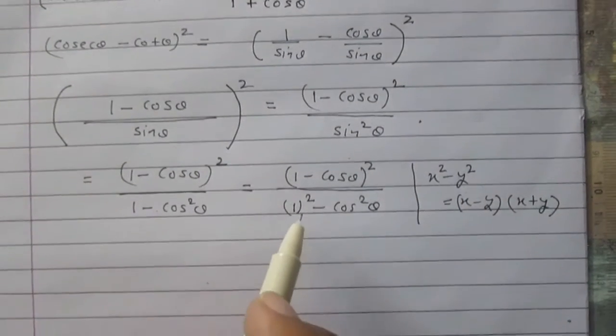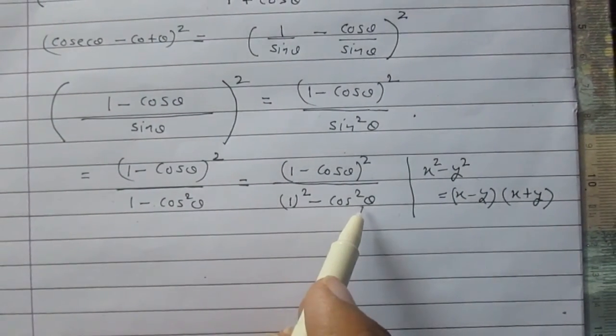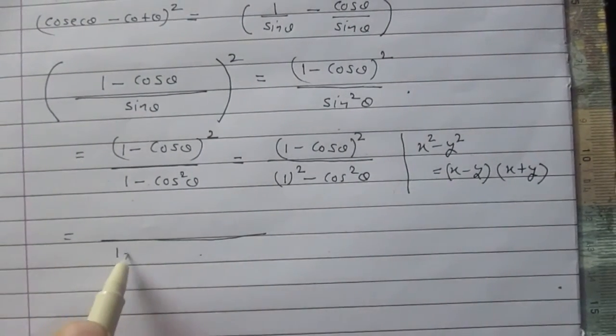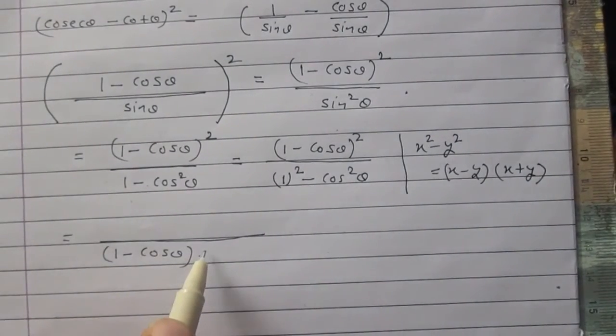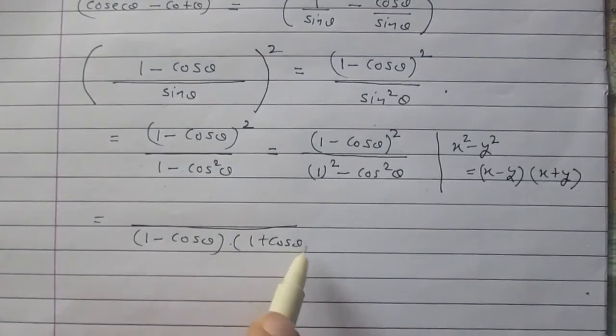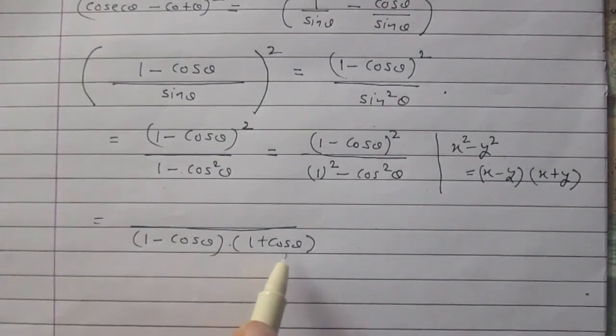So 1 square minus cos square theta can be written as 1 minus cos theta, it is like x minus y, and then 1 plus cos theta, it is like x plus y.